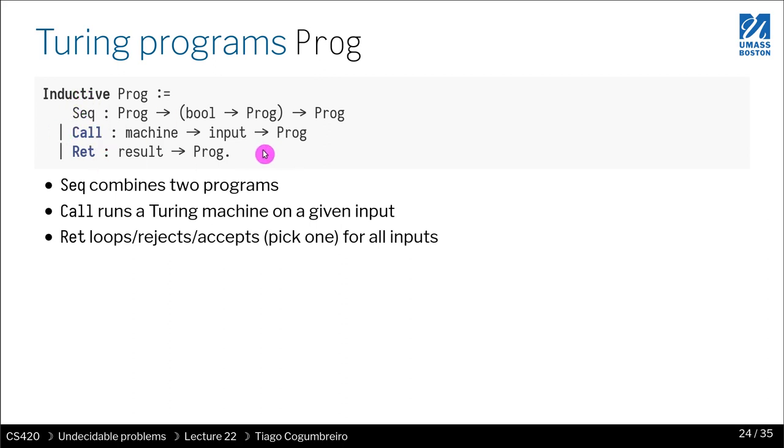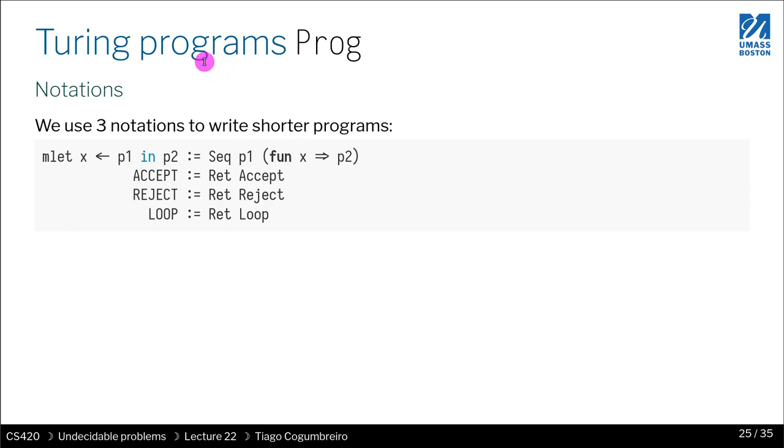There is one more that I'm not showing here, which is the parallel execution of two Turing programs. I leave this discussion to when I introduce it in the lesson, because you won't need it for the homework. In the book, in the slides, in our lessons and lectures, I will use the following notations. There is MLet, which is simply sequencing program one with program two. You are able to access the results of whether P1 terminates, given by this second parameter which is a function.